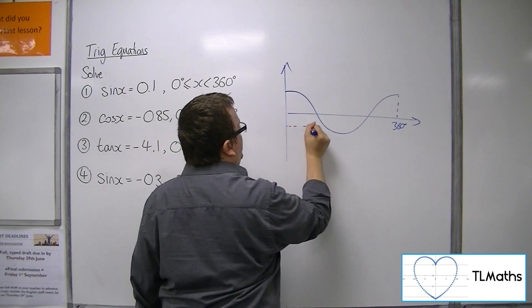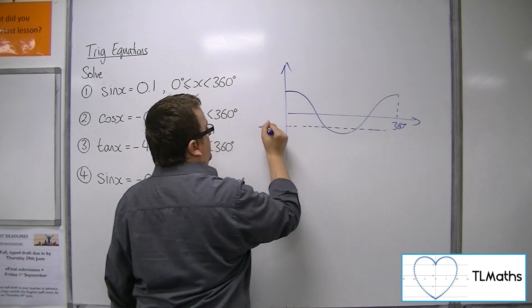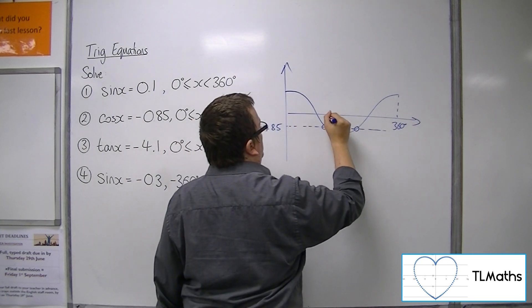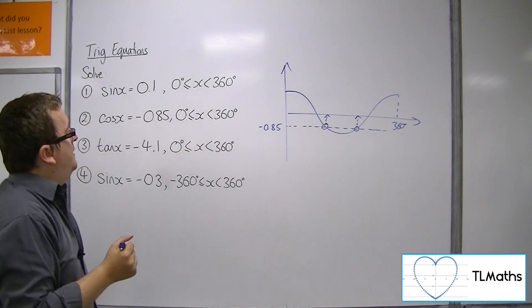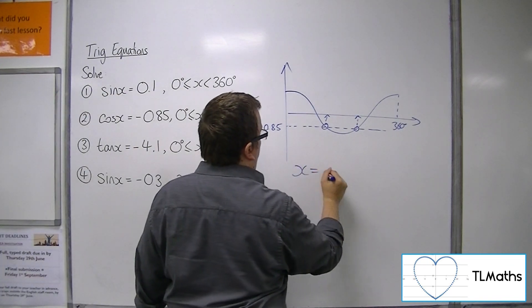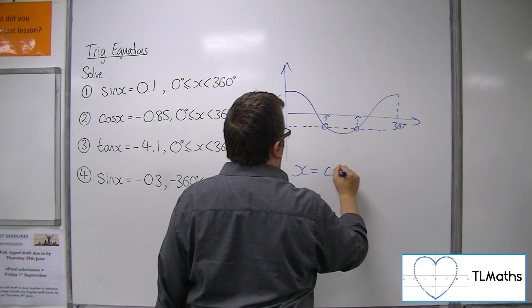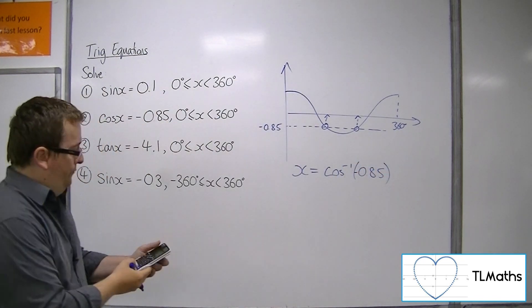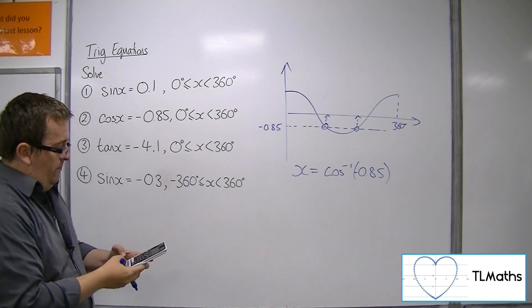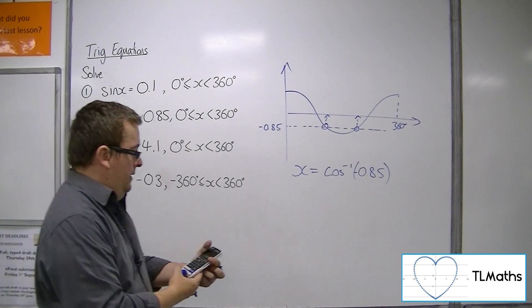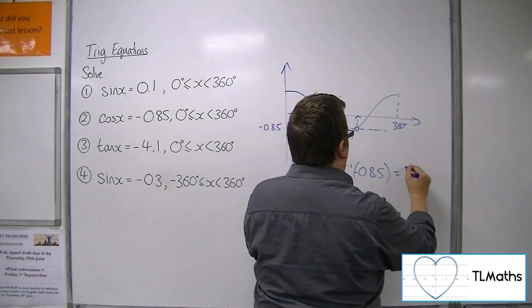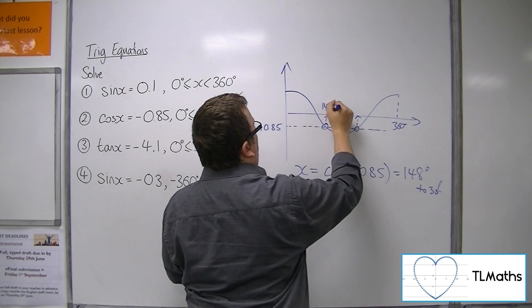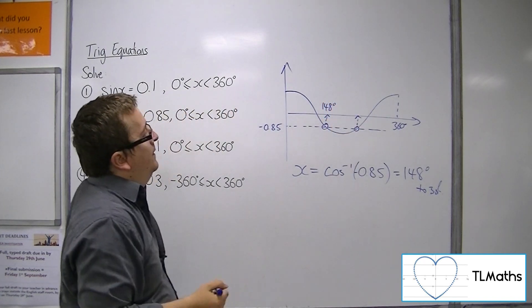Minus 0.85, that's going to be down there. So we're going to have two intersections there, two solutions to find. So first one, inverse cosine of 0.85. Inverse cosine of minus 0.85 is 148 degrees to 3 sig fig.